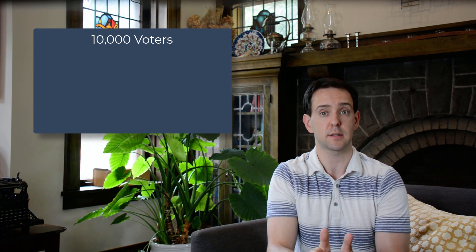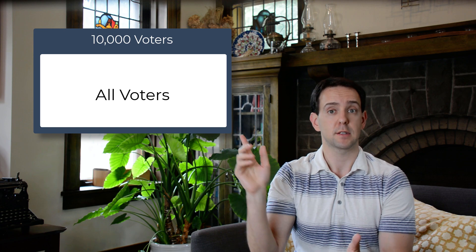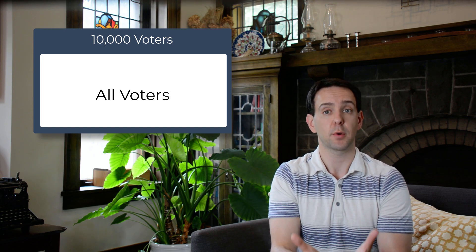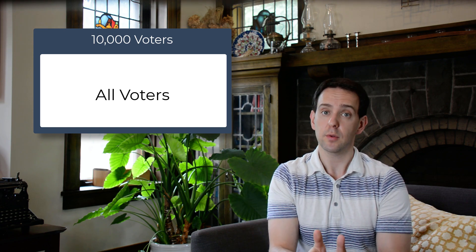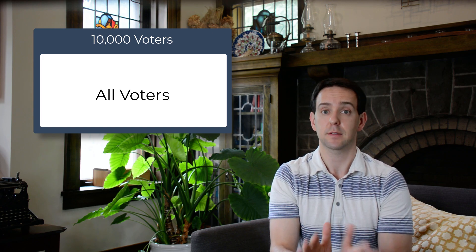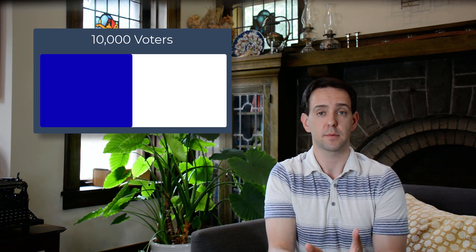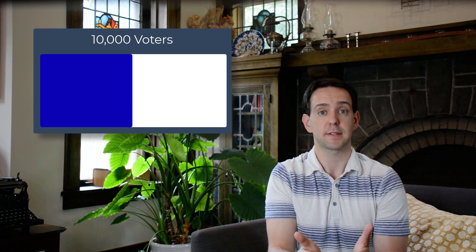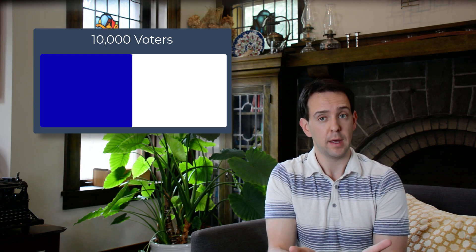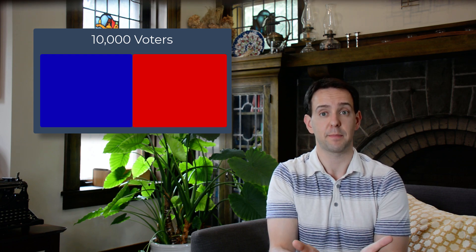Let's look at a very simple example to see how this would work and what some pitfalls might be. To keep things simple, let's assume there are 10,000 people who will vote in an election between two and only two candidates, a Democrat and a Republican. The big box represents all the people that are going to vote. Let's assume that exactly half of our 10,000 voters plan to vote for the Democrat candidate, represented by the side of the box shaded blue, and the other half for the Republican candidate, represented by the side shaded red.